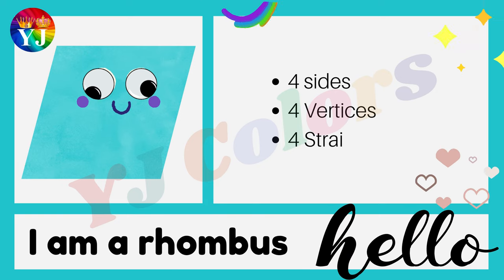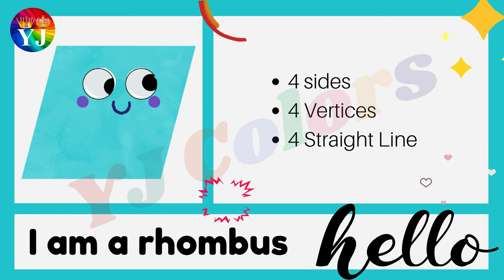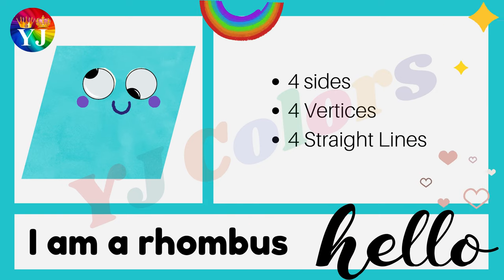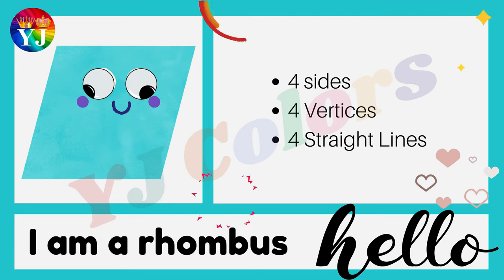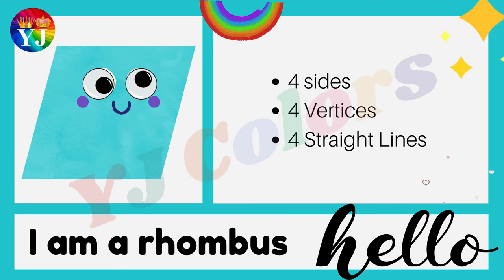Hello, I am a rhombus. I have four sides, four vertices and four straight lines.